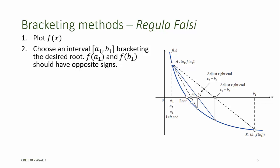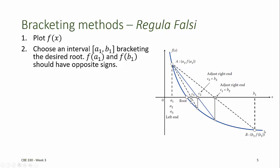Again, f at a1 and f at b1 should have opposite signs, as shown here. The regula falsi method is similar to the bisection method up until this point. Now, instead of choosing the midpoint as the estimate for the root, as we did with the bisection method, we find the x-intercept of the line connecting the points a1, f at a1,